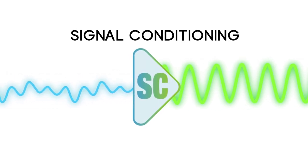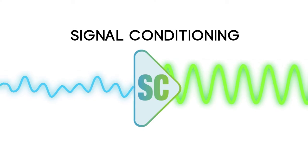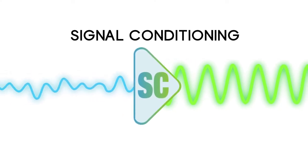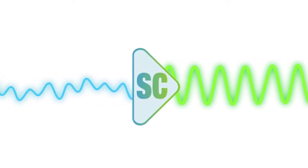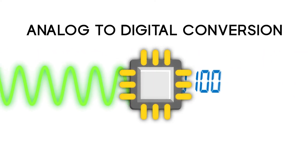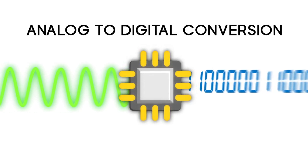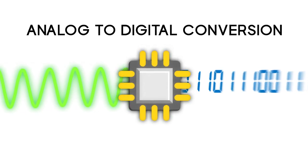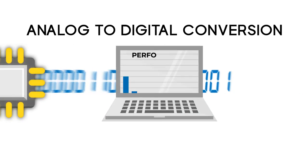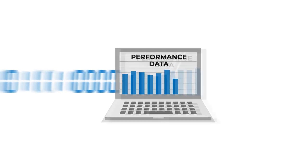The signal is also filtered to remove unwanted frequencies or spikes from the output signal. Now that we have a clean signal, it's time to digitize. This is where the conditioned analog signal is converted into a digital signal that can be processed by a computer and stored for future analysis.